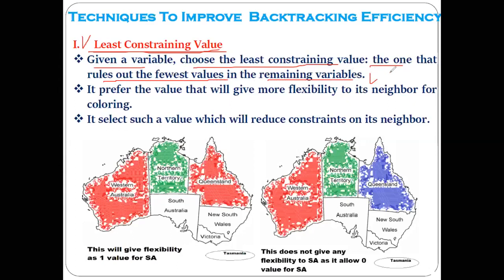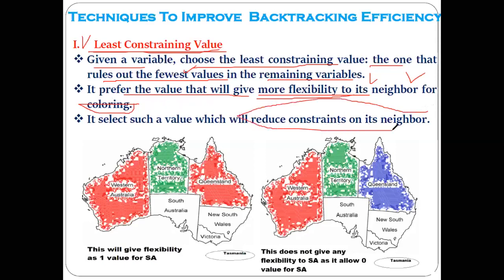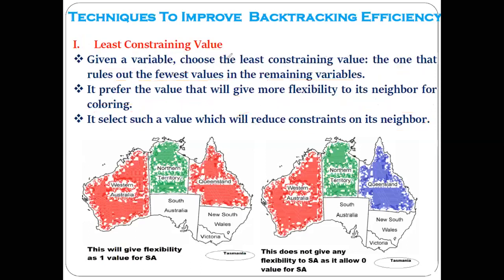The least constraining value is the value which rules out the fewest values in the remaining variables. We prefer the value whose choice provides more flexibility to certain neighbors. This means we try to reduce the constraints on the neighbors of a particular variable. We select such a color — a value — because of which there will be a reduction in constraints on its neighbors.